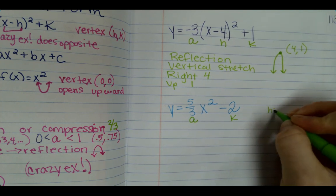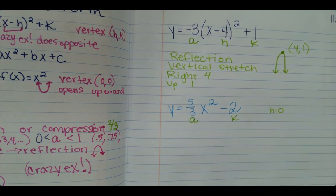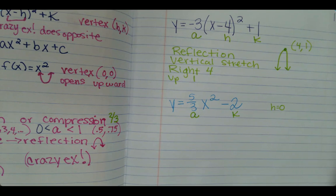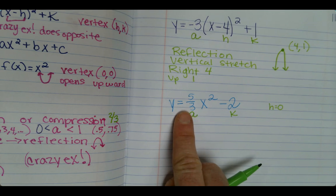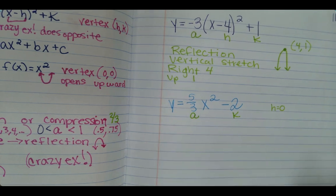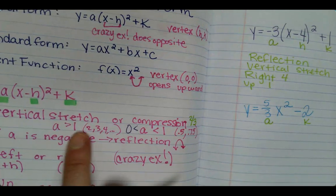So we first look at the a, is it negative? And it's not. But the a is 5 over 3. We've got to determine if that's between 0 and 1 for compression or if that's greater than 1 for stretch. So what you can do is just find out what is 5 over 3. Let's put it in the calculator. 1.6 repeating.